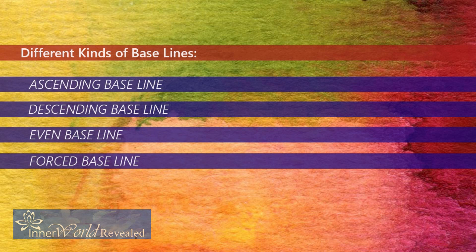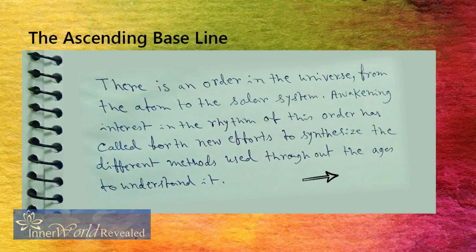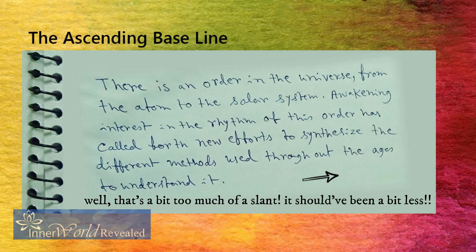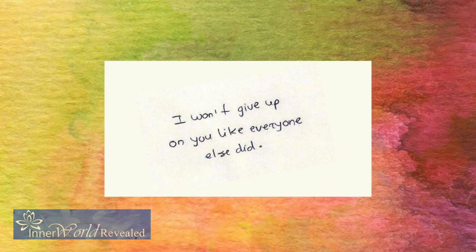The baseline indicates the attitude of a person. If the baseline is ascending or going uphill, it indicates an optimistic attitude. A person with an optimistic attitude would not get discouraged by little things going wrong. In case the baseline has a sharper uphill slant, it indicates too much optimism, which can also lead to poor judgment — because when you are too optimistic you simply fail to gauge upcoming danger.